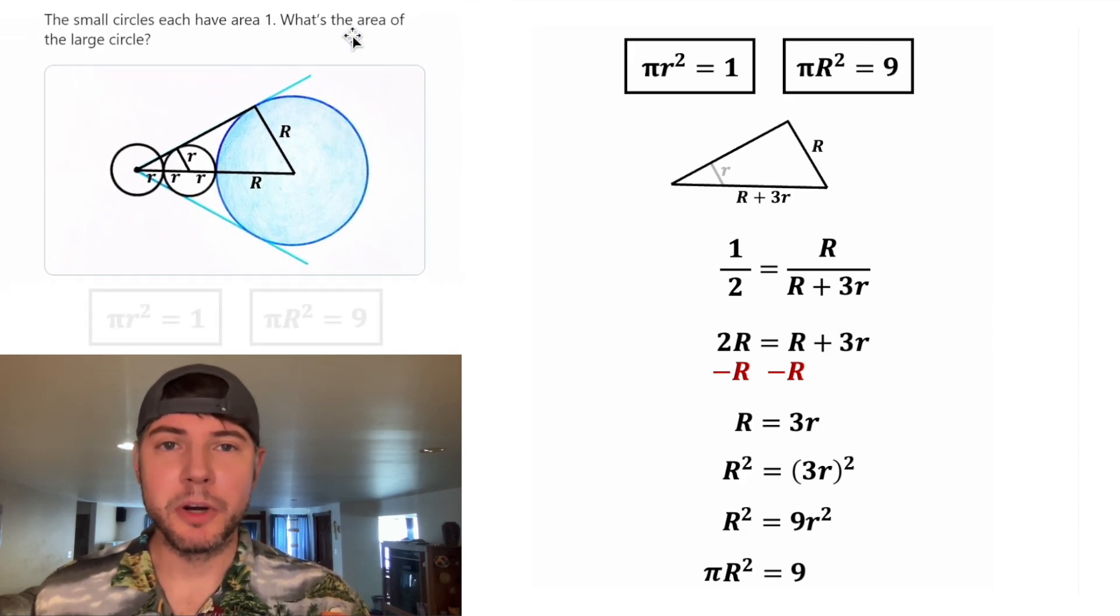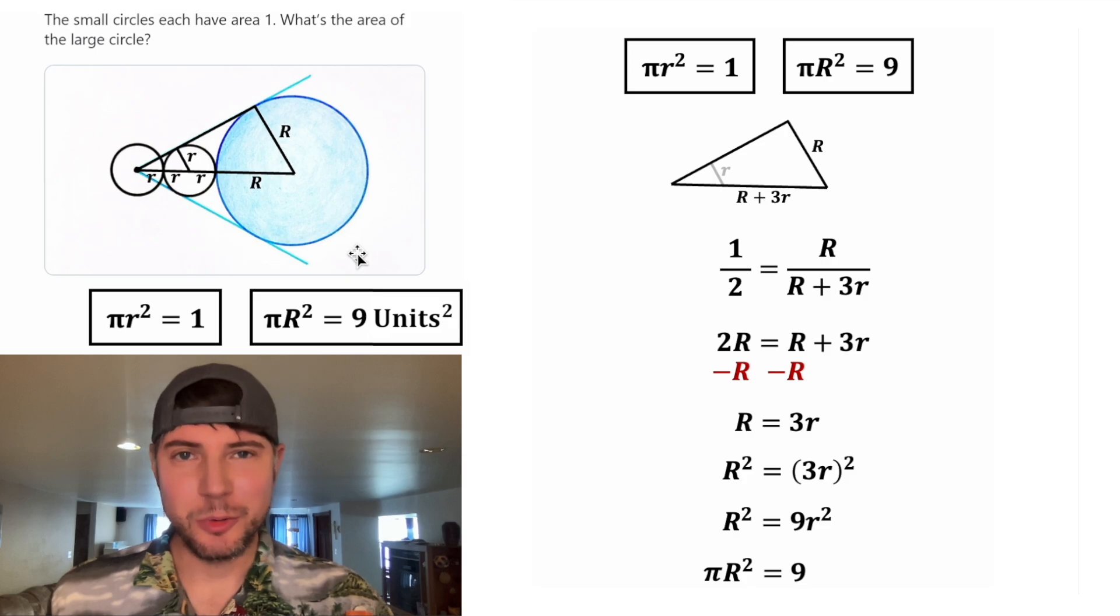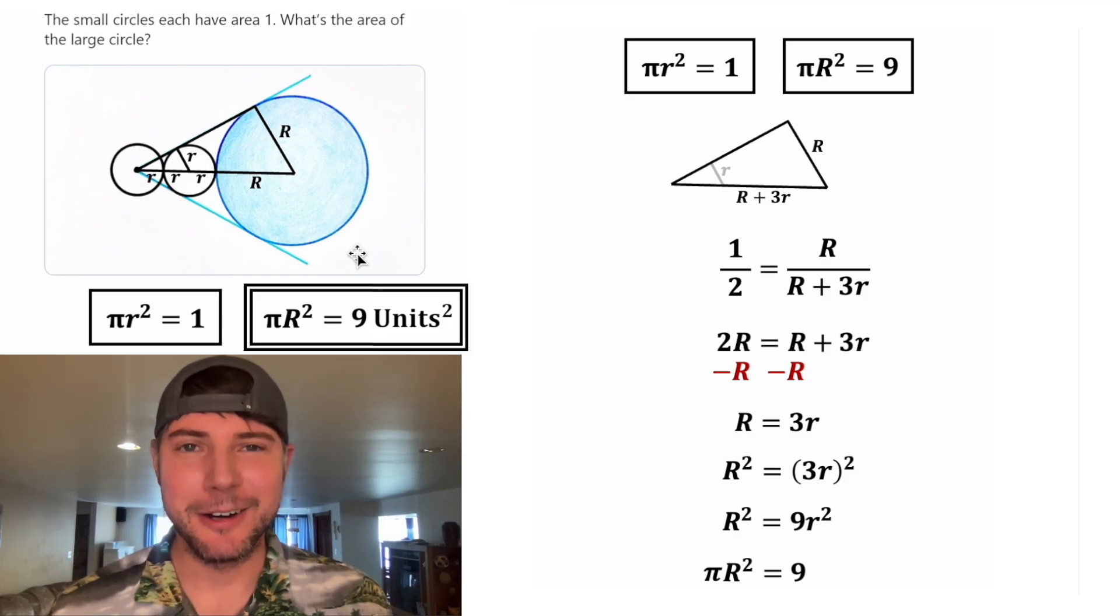And now we have the answer to the question. What's the area of the large circle? So that'll be nine units squared. Let's put a box around it. Exciting.